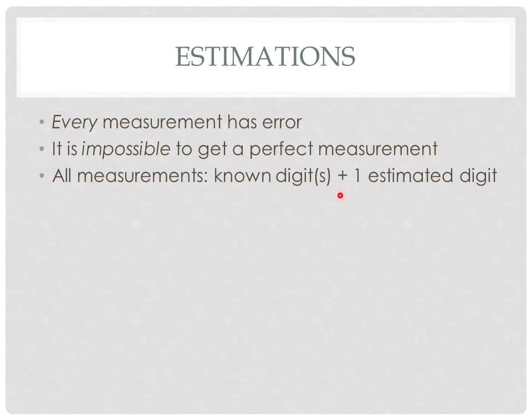Every measurement has known digits — maybe just one known digit, maybe several known digits. Plus, the last digit is always estimated. These digits together, the known digits and the estimated digit, are known as significant figures, or sometimes significant digits.